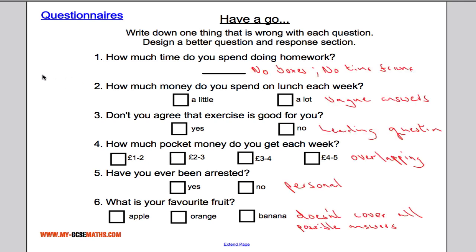Here are the answers. First: 'How much time do you spend doing homework?' — there are no tick boxes and no time frame, so it needs to specify per day or per week. Second: 'How much money do you spend on lunch each week? A little or a lot?' — the answer boxes are vague. 'A little' to some people could be a lot to others. You want specific tick boxes covering all possible answers, like zero, one to four, five to seven, and so on.